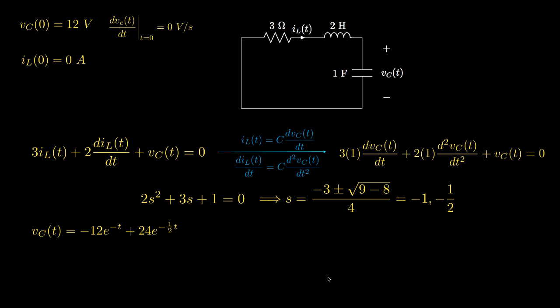Substituting K1 and K2 back into our expression for the capacitor voltage, we find that VC(t) = -12·e^(-t) + 24·e^(-t/2).